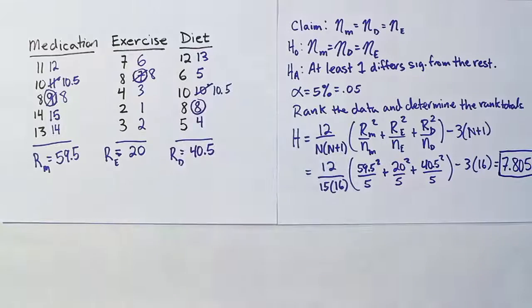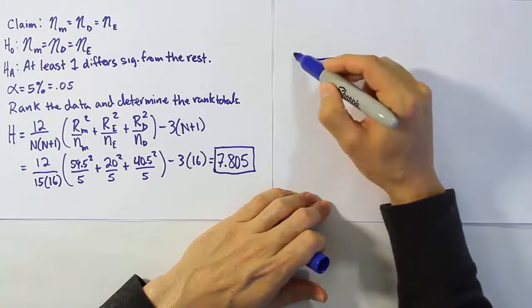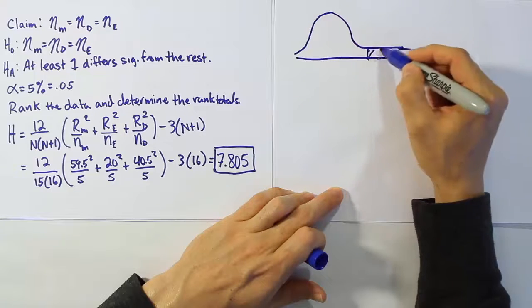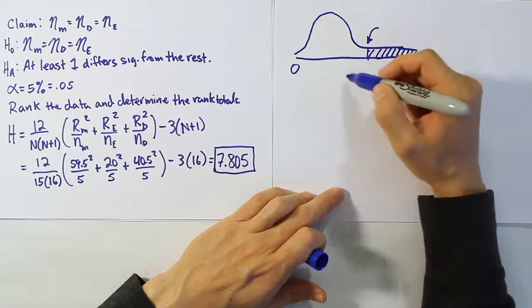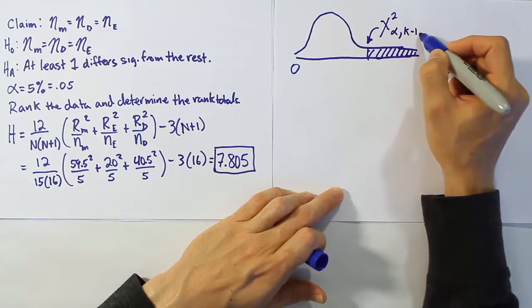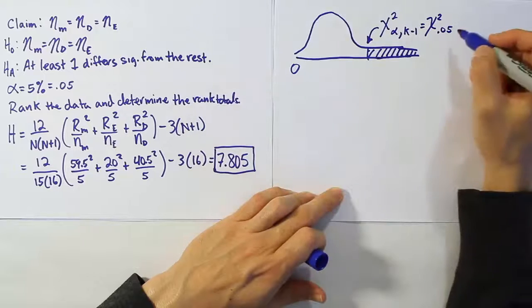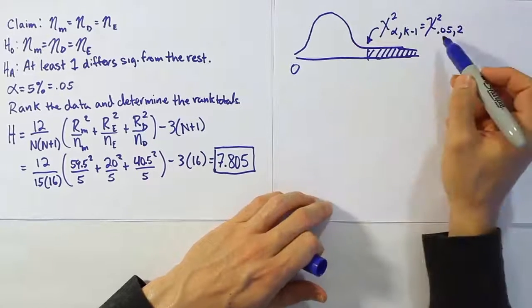Now, once we have that, the next step is to compare our test stat to its critical value. Remember that this H test statistic is distributed as the chi-squared random variable would be. This is our rejection region. What we want to do is figure out the chi-squared value that starts the rejection region. So the chi-squared value is going to have alpha and k-1 degrees of freedom. For us, that's chi-squared .05 because we had a 5% significance level, and k-1 is just 2 here. We had three treatments: medication, exercise, and diet. Let's go to our table now, our chi-squared table. We're going to look in the .05 column under 2 degrees of freedom, and that will give us our critical value.